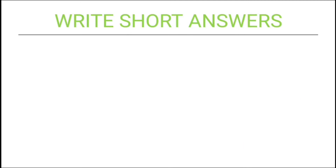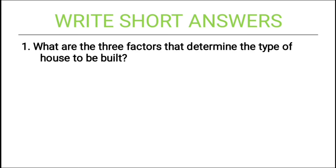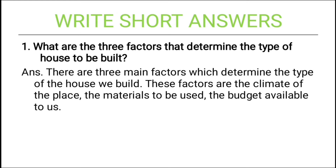Now let us see short answers. First: what are the three factors that determine the type of house to be built? There are three main factors which determine the type of house we build. These factors are the climate of the place, material to be used, and the budget available.